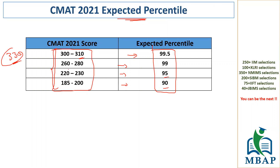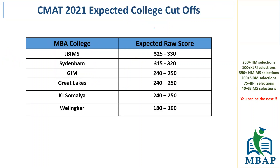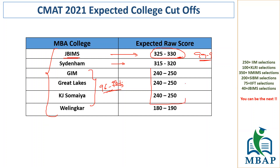Looking at expected college cutoffs for prominent colleges that accept CMAT scores: JBIMS is at 99.9 percentile, and I'm expecting the score for that to be around 330. Sydenham will be slightly less than that. Coming down, Great Lakes, GIM, and KJ Somaiya usually have around 97 to 98 percentile cutoffs — expecting the score to be around 260 or not more than that. If you have scored around 250 to 260, you should definitely be expecting calls from these colleges.